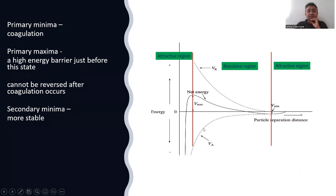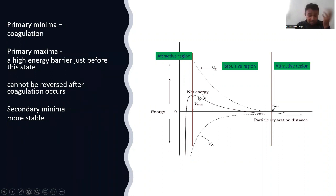The attractive Van der Waals forces act between rubber particles, and the repulsive electrostatic forces act between the particles. The net energy between attraction and repulsion is then plotted. When you plot the net energy curve, you can observe the combined effect of both forces.